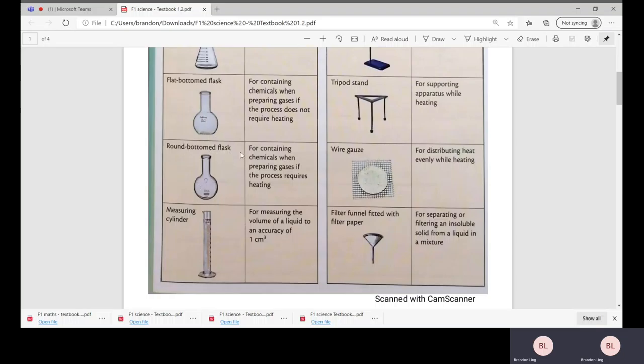Next you have your tripod stand on your right. Tripod stand is basically for you to place a wire gauze on top of it and also the flat bottom flask for boiling or heating purposes. The tripod stand is for supporting apparatus while heating.